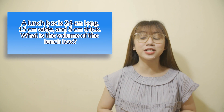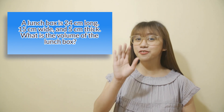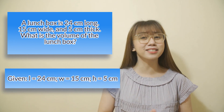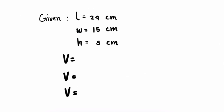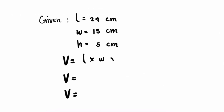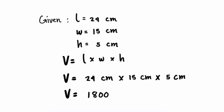A lunchbox is 24 centimeters long, 15 centimeters wide, and 5 centimeters thick. What is the volume of the lunchbox? The given are: length equals 24 centimeters, width equals 15 centimeters, and height equals 5 centimeters. The formula is length times width times height. Substituting: 24 cm × 15 cm × 5 cm. The volume of the lunchbox is 1,800 cubic centimeters.